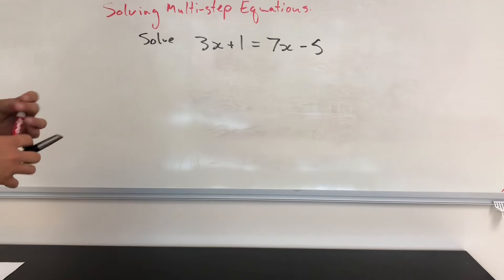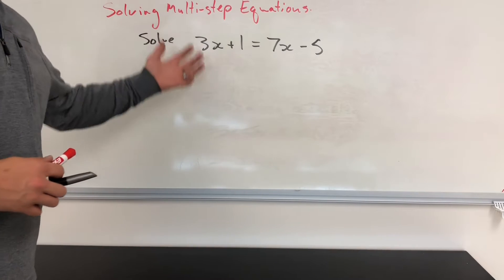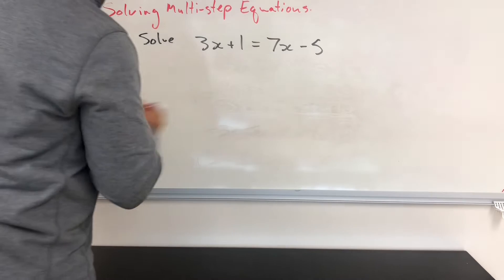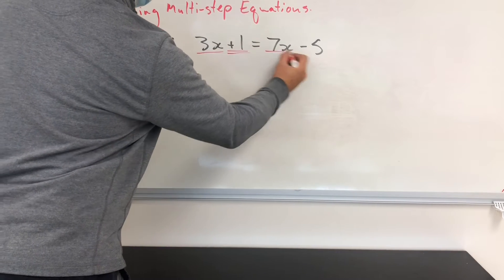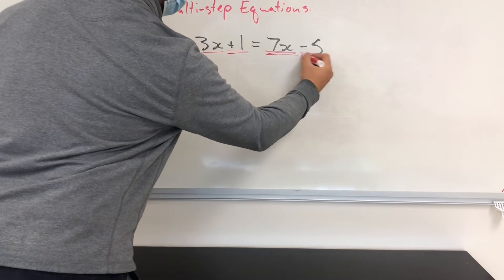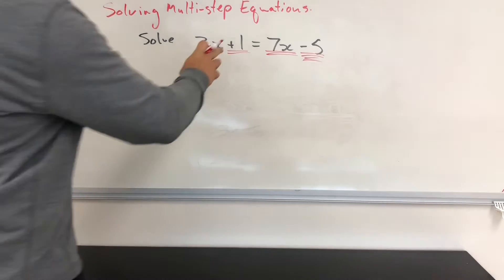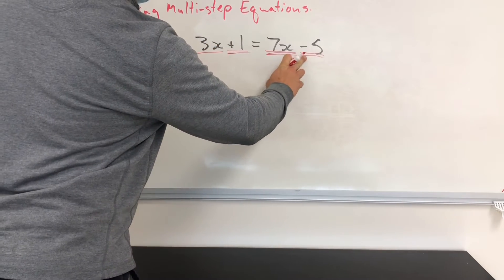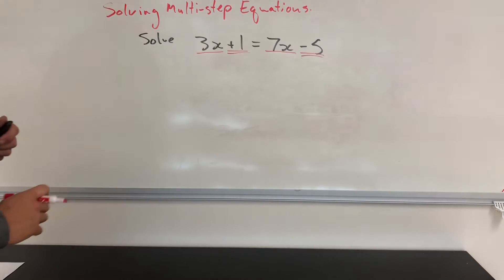So if we wanted to solve this particular equation, what we would have to do is we would have to collect our like terms. So that means we would have to take a look at all four of our terms and we would have to bring them together if they were like. Now, I'll note that the 1 and the 5 are like. And I'll also note that the 7x and the 3x are like.